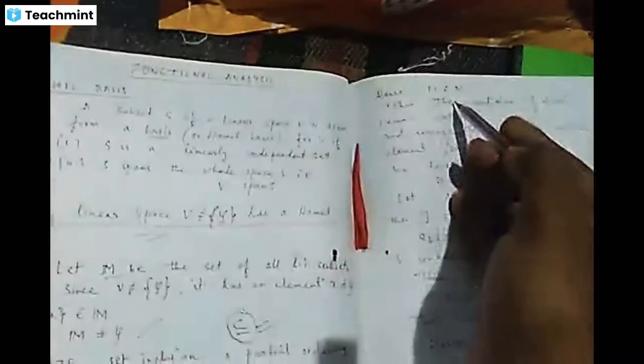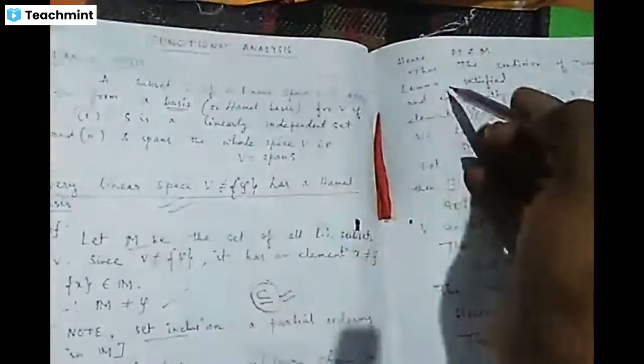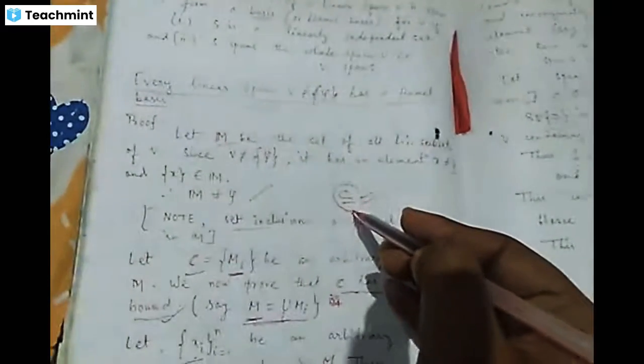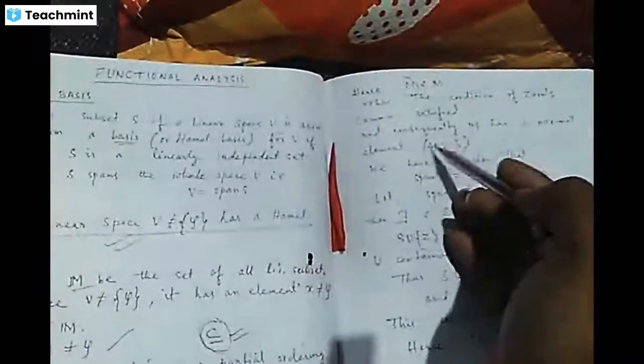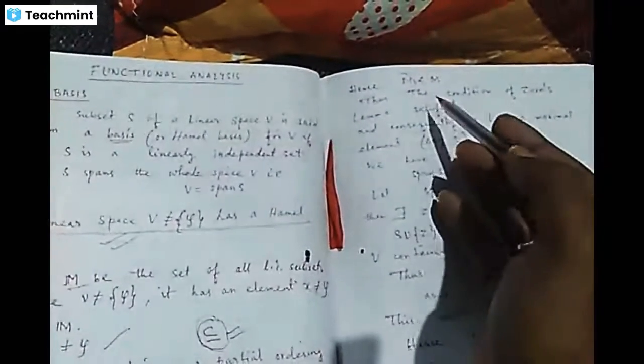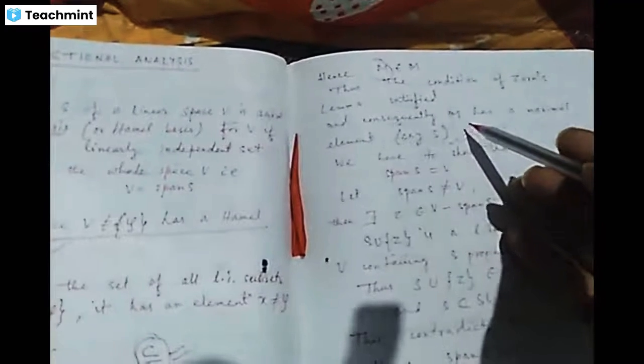This means C has an upper bound, because it is a linearly independent set and M is the collection of all linearly independent subsets. So M* belongs to M. Recalling Zorn's lemma: under set inclusion, a totally ordered chain has an upper bound which is M*, so Zorn's lemma is satisfied and we must have a maximal element S in the arbitrary chain C. S must be a linearly independent set because C consists of all linearly independent subsets from M.